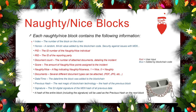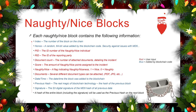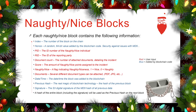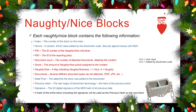What does a naughty nice block look like? The naughty nice block contains two different kinds of information, as shown on the screen here. The red information is user input — this is information that you will be adding once you've graduated from Elf University's curriculum. The blue information is added by the blockchain code. Each block consists of an index, which is the number of the block on the blockchain, and a nonce, which is a 64-bit value randomly generated by our blockchain code and added to the block. We'll explain the reason for this in the coming slides.